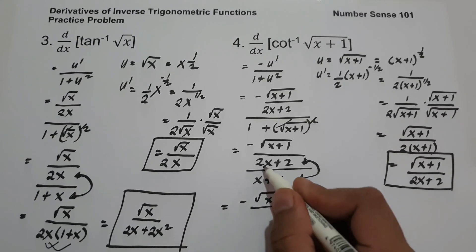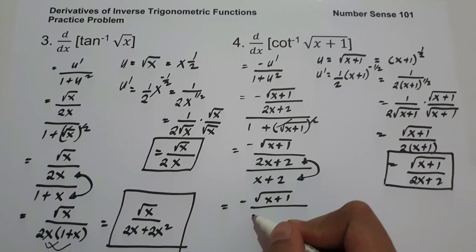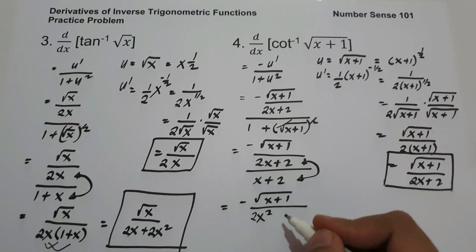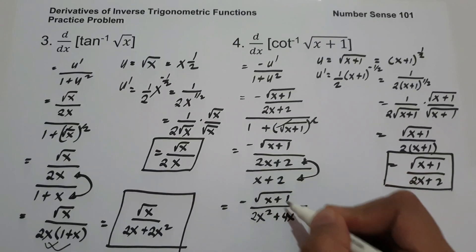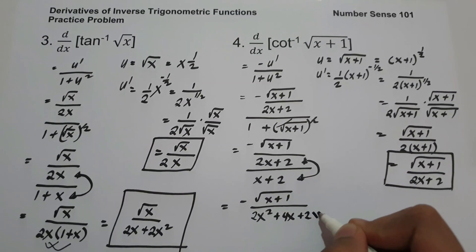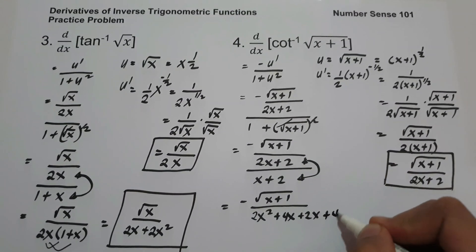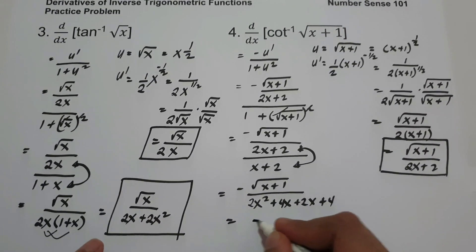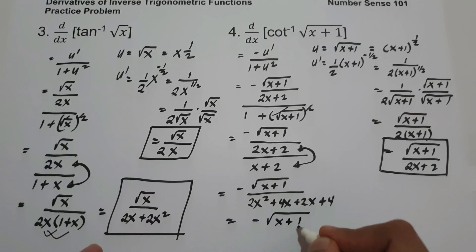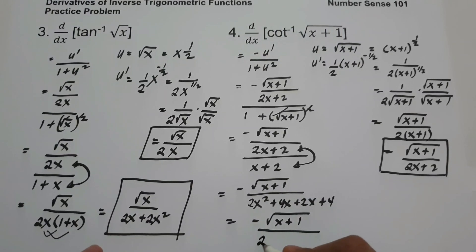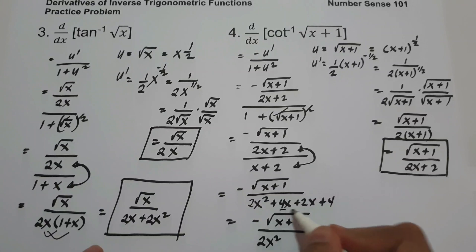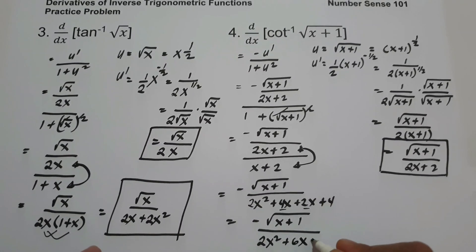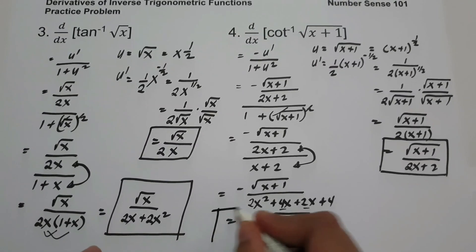Expanding: 2x times x is 2x squared, 2x times 2 is 4x, 2 times x is 2x, and 2 times 2 is 4. Combining like terms: 4x plus 2x gives 6x. So the final answer is negative square root of x plus 1 over 2x squared plus 6x plus 4.